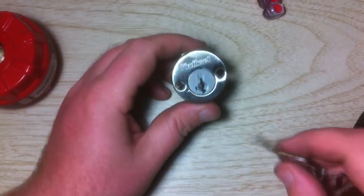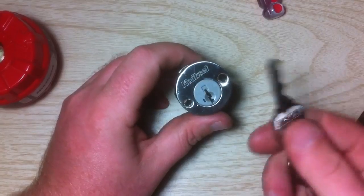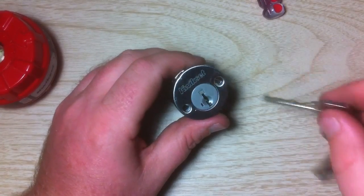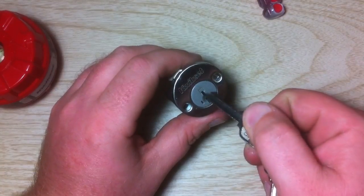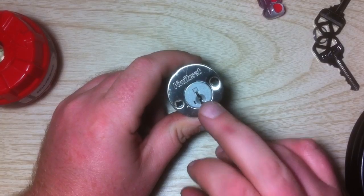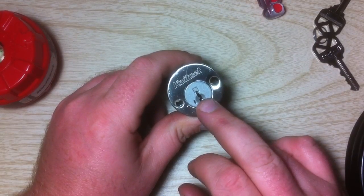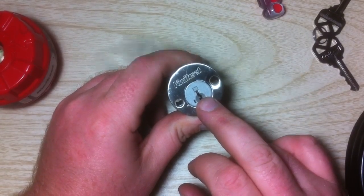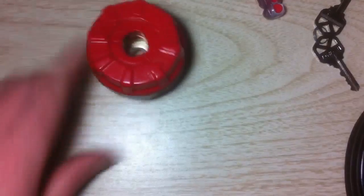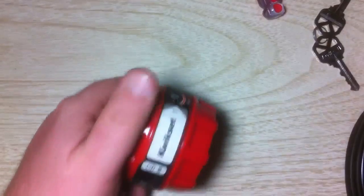Generally when you rekey a smart key, you have to have a current operating key that operates the lock. What you do is you put the key in, turn it to three o'clock. However, you can only rekey these smart keys if you have a key that works the lock currently. If you do not have a key that works the lock currently, you have to use the cradle, the Kwikset cradle.